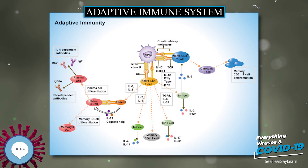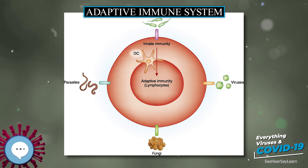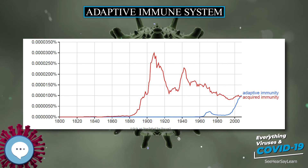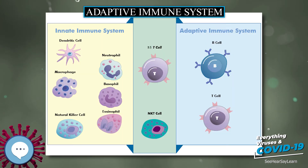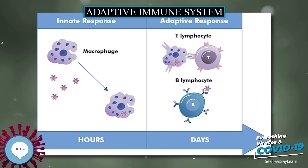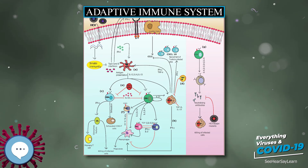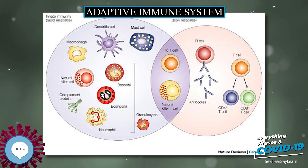Immunological memory can be in the form of either passive short-term memory or active long-term memory. Passive memory is usually short-term, lasting between a few days and several months. Newborn infants have had no prior exposure to microbes and are particularly vulnerable to infection. Several layers of passive protection are provided by the mother: in utero, maternal IgG is transported directly across the placenta, so that at birth, human babies have high levels of antibodies with the same range of antigen specificities as their mother. Breast milk contains antibodies, mainly IgA, that are transferred to the gut of the infant, protecting against bacterial infections until the newborn can synthesize its own antibodies. This is passive immunity because the fetus does not actually make any memory cells or antibodies — it only borrows them.